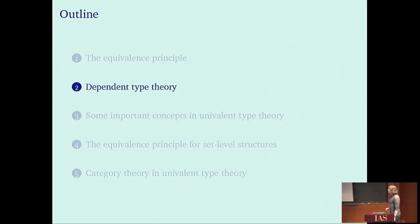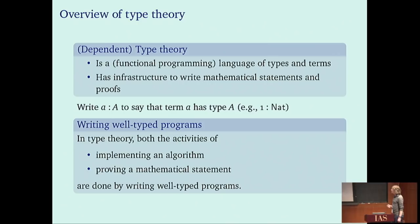Now in the second part I will explain what type theory is — a very brief and terse introduction. One way to describe type theory is to say it's a functional programming language that has types and terms, and in addition to that, it also has an infrastructure to write mathematical statements and proofs. We will write terms and types with a small 'a' for a term and write 'a : A' to say that small a is a term of type capital A.